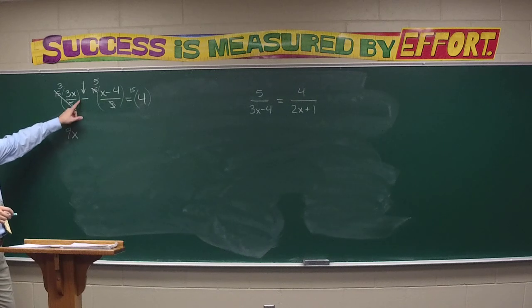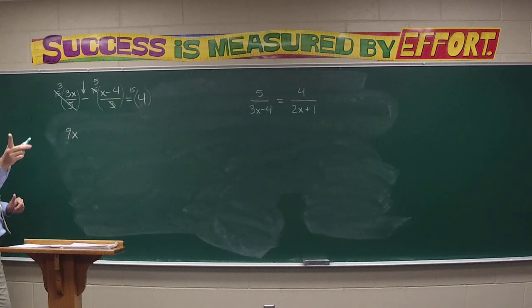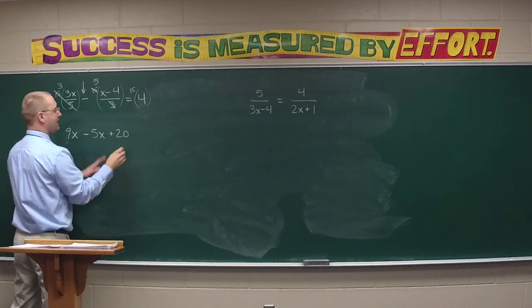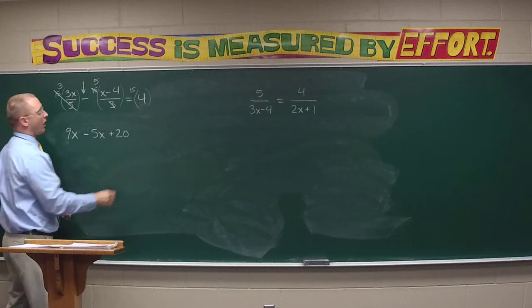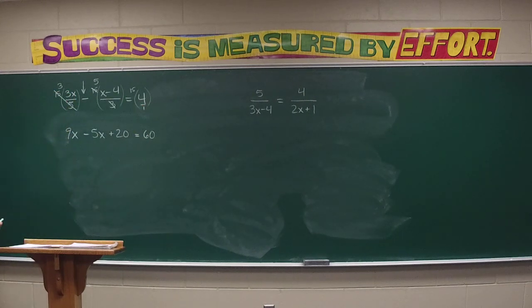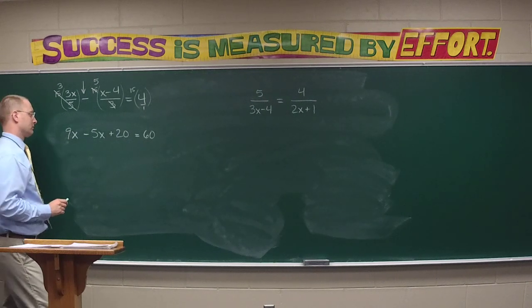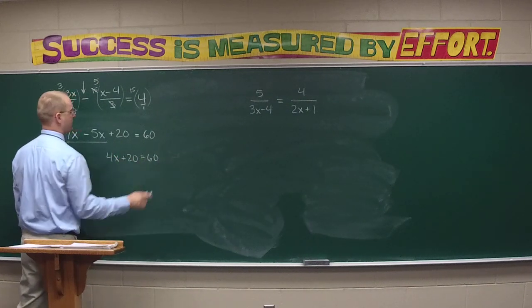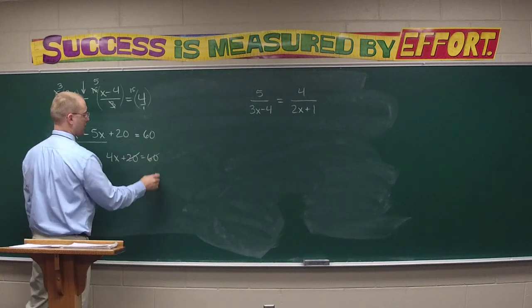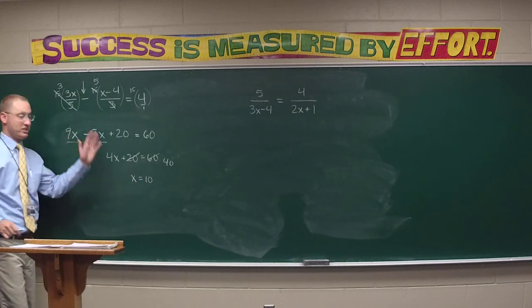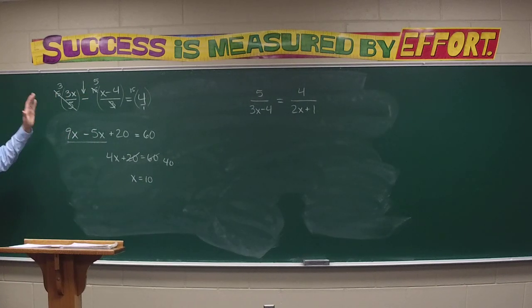If I had 3x over 5 minus x minus 4 over 3 equals 4, solve. Audrey, what is the LCD? Fifteen. Once I figure out that 15, I use it to multiply by everything. This fraction, this fraction, and even the 4, even though it's not a fraction. Everything gets multiplied by 15, and the whole point is that the 15 cancels with the denominators.